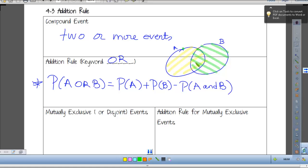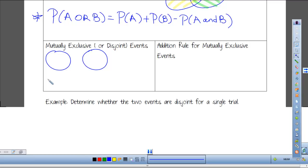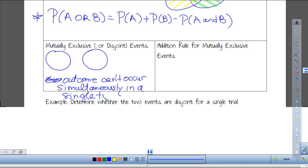Mutually exclusive or disjoint events. Instead of them overlapping like that, mutually exclusive events look like this. These are events that cannot occur simultaneously in a single trial.